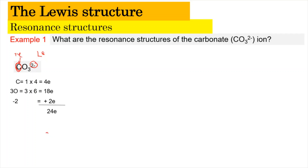Carbon is placed at the center, bonded to 3 oxygen atoms. With 3 bonds formed, we subtract 6 electrons, leaving 18 electrons remaining. These 18 electrons are used to complete the octet of all three terminal oxygen atoms, placing 6 electrons on each. After distributing 18 electrons to the terminal oxygens, all three terminal oxygens are now octet-satisfied. The structure is placed in brackets with a 2- charge to show the overall ion charge.